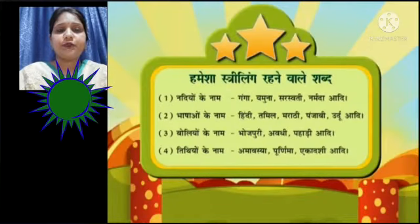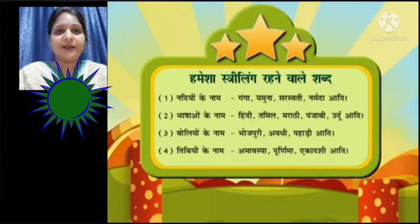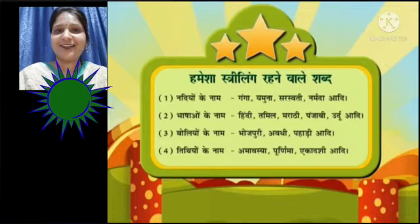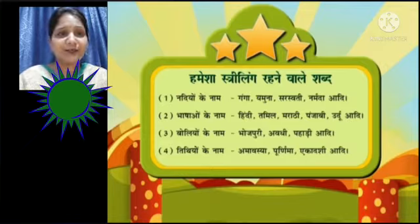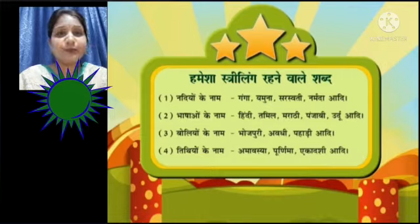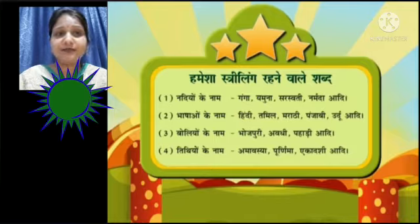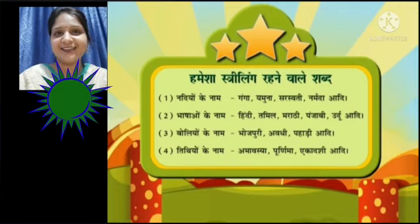Ab dekhiye kuch shabd aise hote hain jo hamesha Striling hi rehte hain. Nadiyon ke naam: Ganga, Yamuna, Saraswati, Narmada, aadi. Bhashaon ke naam: Hindi, Tamil, Marathi, Punjabi, Urdu, aadi. Boliyon ke naam: Bhojpuri, Awadhi, Pahadi, aadi. Tithiyon ke naam: Amavasya, Purnima, Ekadashi, aadi. Ye hamesha Striling hi rehte hain.